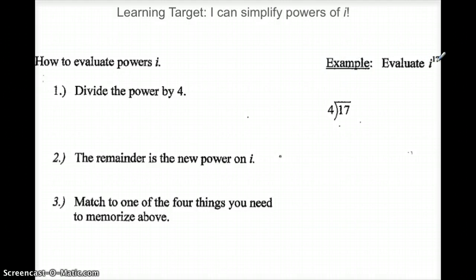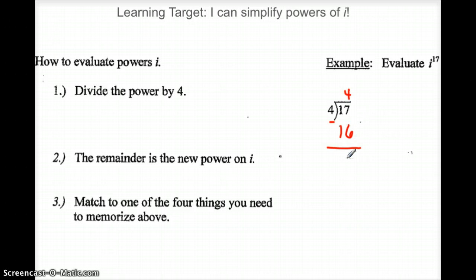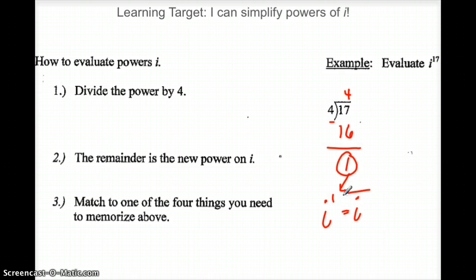I'm going to look at i to the 17th. Since there are four things in the cycle, we divide 17 — the power — by four, always a four, because there are four things in the cycle. The remainder will tell me where we end up. Four goes in four times, but it's the remainder that matters. 17 minus 16 gives a remainder of one. So this matches i to the first, which is just i. So i to the 17th is really just plain old i.